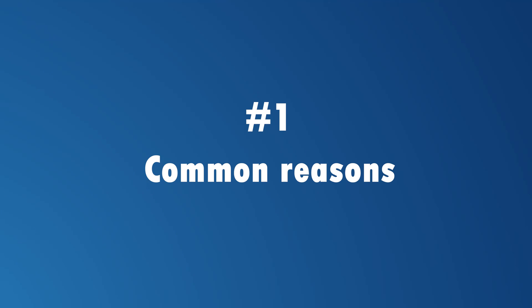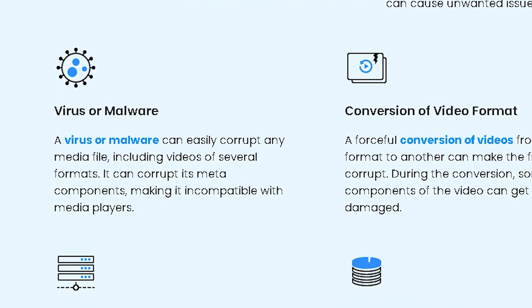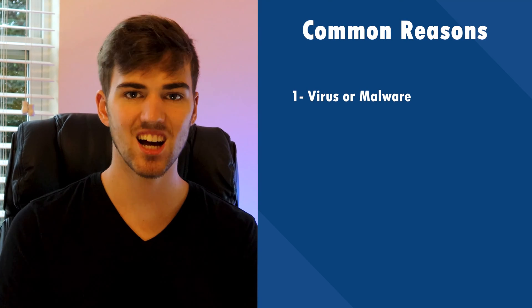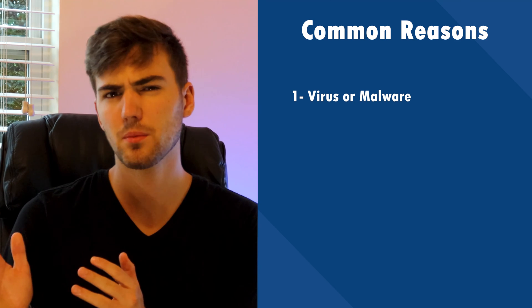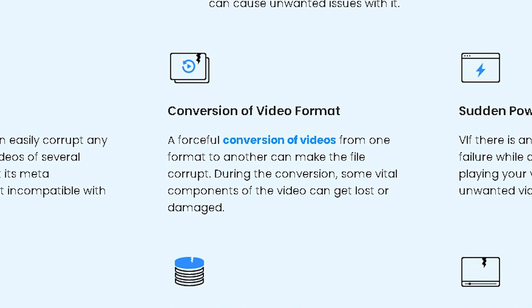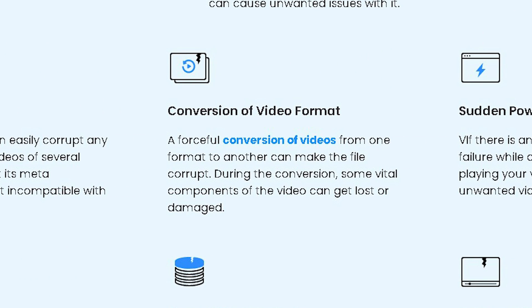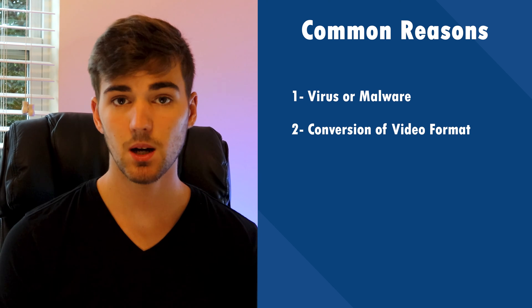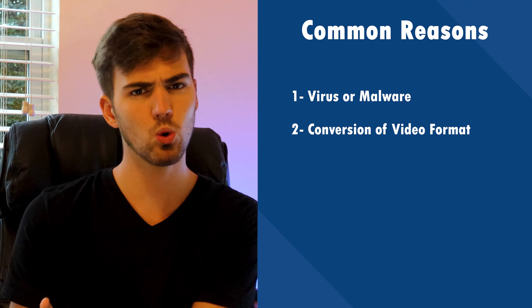Now that you're familiar with different symptoms of video corruption, let's dive into the technical reasons why your videos might get corrupted in the first place. Reason one — virus or malware. Viruses and malware are the most common technical reasons behind video corruption. In general, viruses get downloaded when you download from unknown sources on the internet, but apart from downloaded videos, the virus can also affect existing files on your system. Reason two — conversion of file format. Converting videos from one format to another can also cause file corruption, particularly if you're using an unreliable third-party tool.